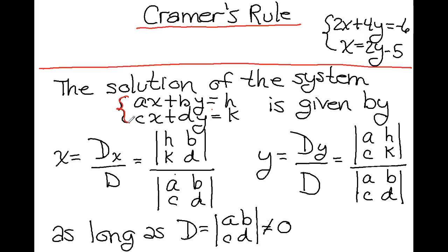The variable x will equal the determinant sub x over the determinant D, and the variable y equals the determinant sub y over the determinant D. D is this determinant here — these are the coefficients of our x and y variables in our equations.